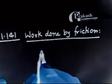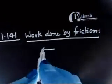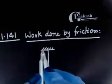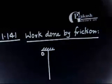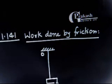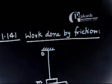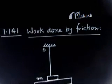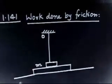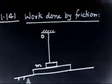You have something like this and there is a thread. This point they are calling it as O. This thread has a mass — a small m — that is attached. Below this mass, there is a plank. This plank is kept on a horizontal surface. This surface is smooth.